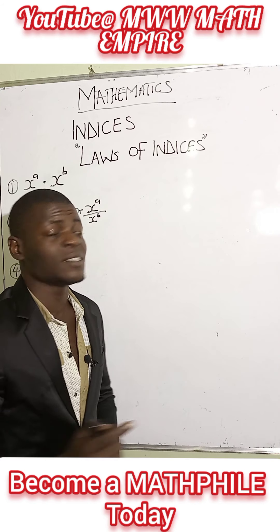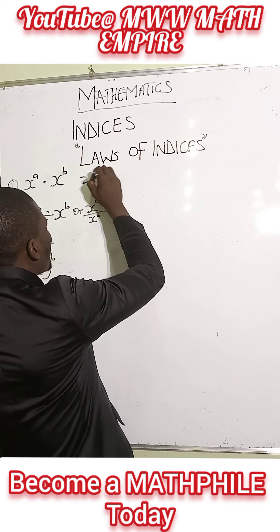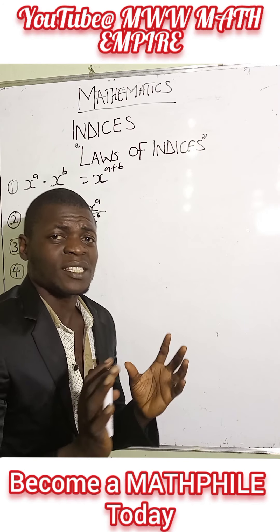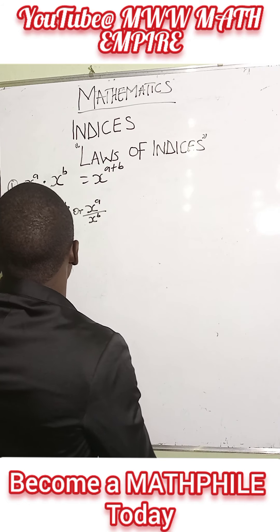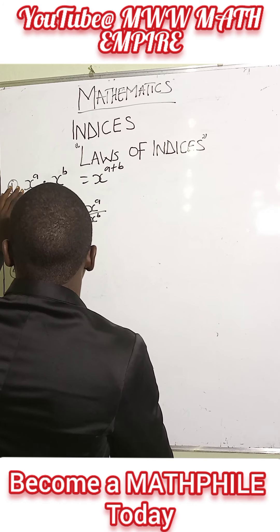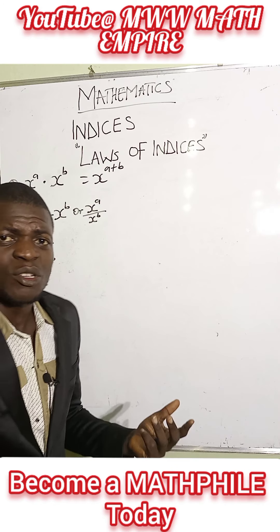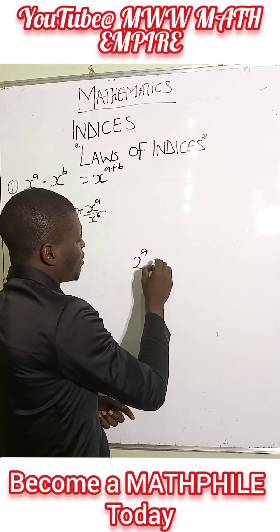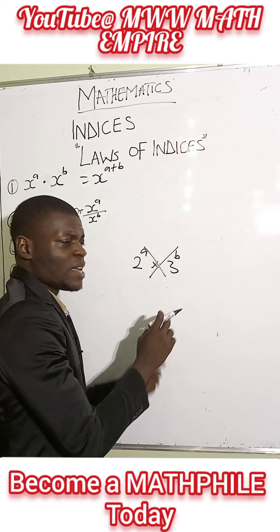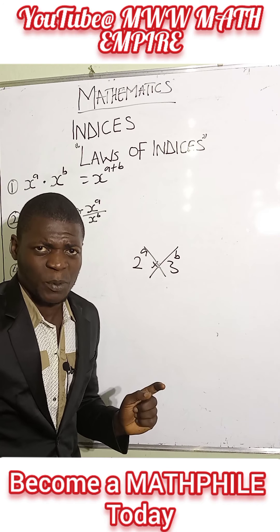We have the first one, which reads: x raised to the power of a multiplied by x raised to the power of b equals x raised to the power of a plus b. This expression means that both of them need to be on the same base. If we don't have them on the same base, it's not going to work. Because we have x here and another x here. Using a non-variable example: 2 raised to the power of a multiplied by 3 raised to the power of b cannot work because they don't have the same base. These are the bases, while the powers are the indices or exponents.